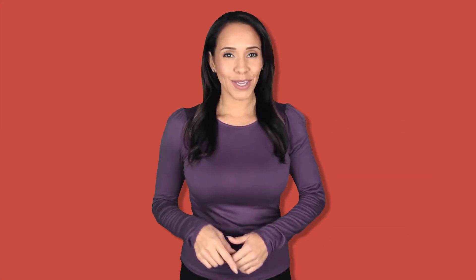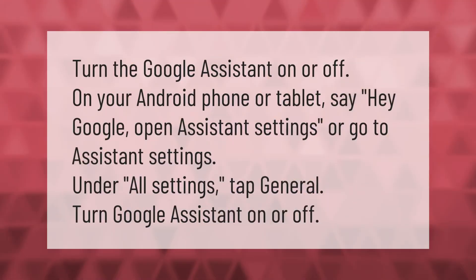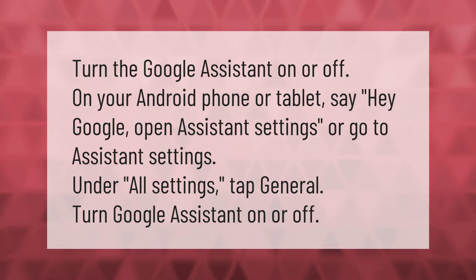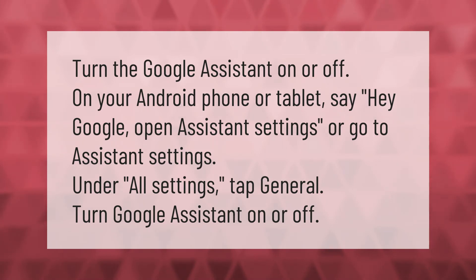To turn the Google Assistant on or off on your Android phone or tablet, say 'Hey Google, open Assistant settings', or go to Assistant settings under All Settings. Tap General, then turn Google Assistant on or off.